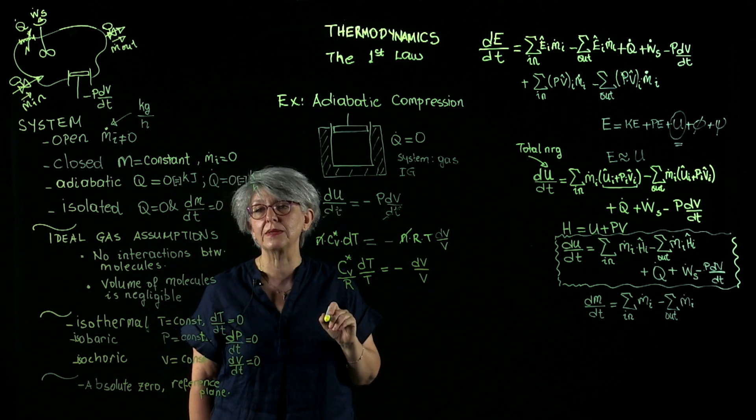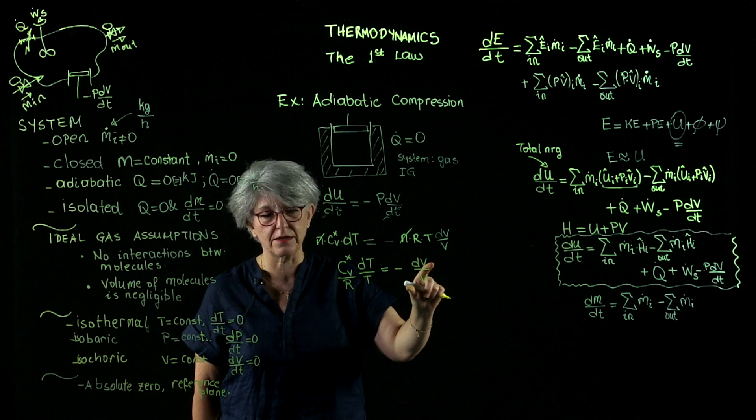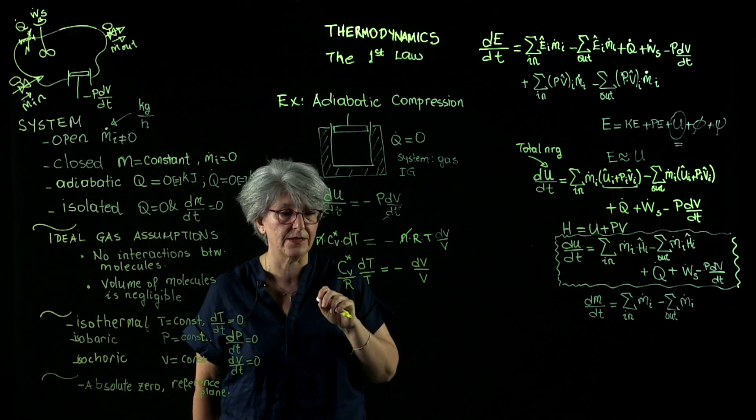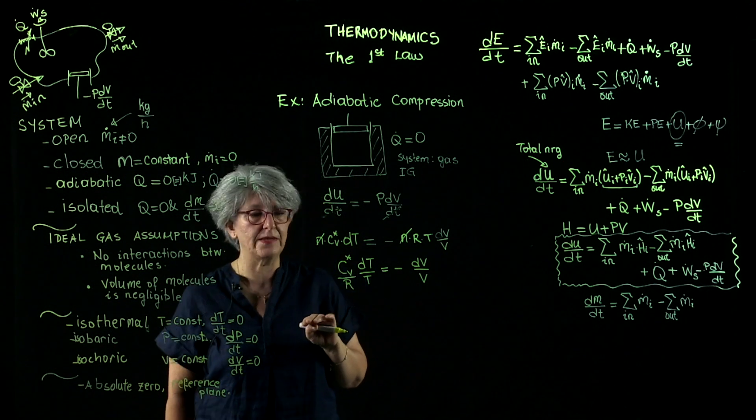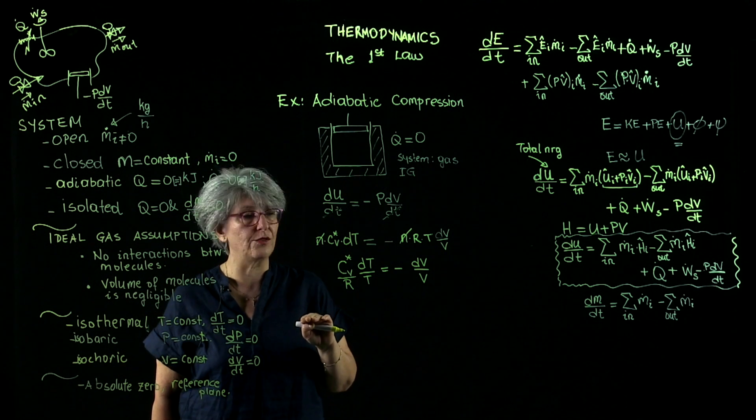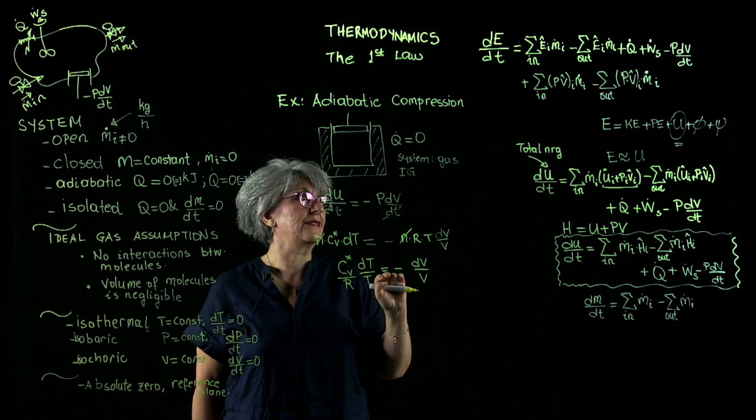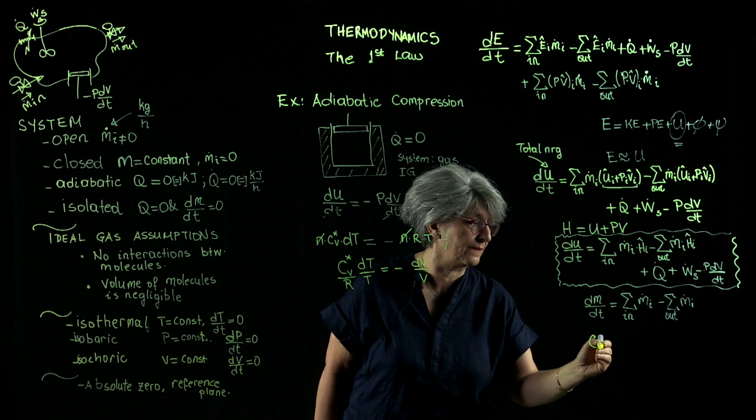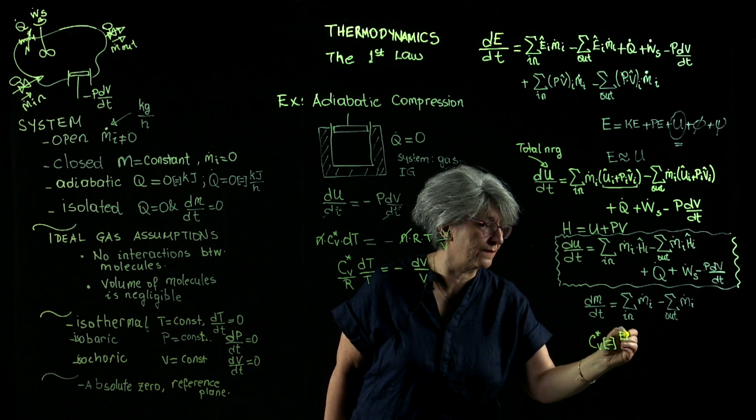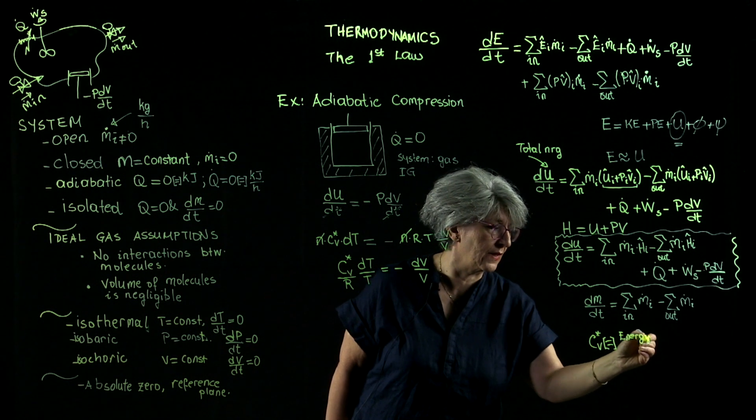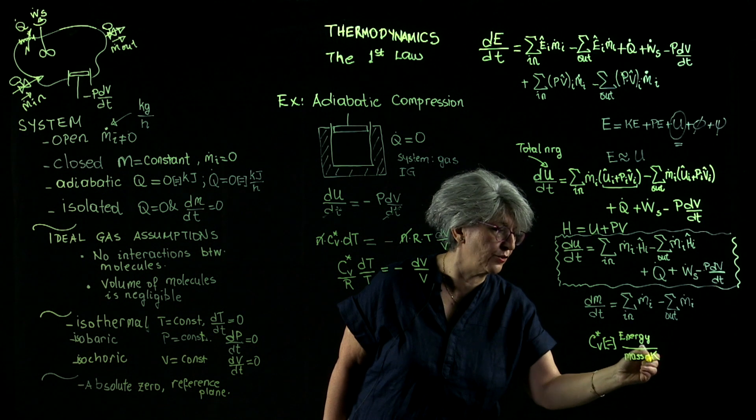And I will check the dimensional consistency of this equation. Here, volume divided by volume, dimensionless. Temperature divided by temperature, dimensionless. So cv should have the same units as r. So let's make a note of this, that cv* has the units of energy per unit mass or mole per unit absolute temperature, which is Kelvin.